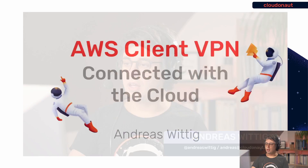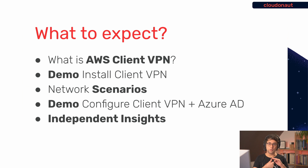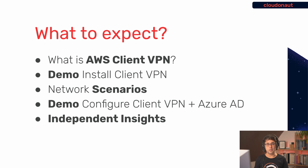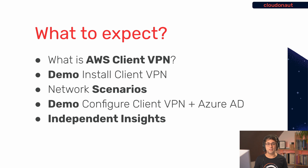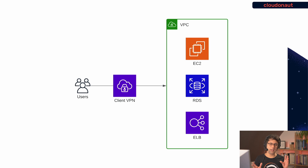Here's what this video covers: first, what is AWS Client VPN and how does it work; I'll show you how to install the VPN client and how everything works from an end-user perspective; we'll discuss network scenarios you can implement; and I'll show you how to configure Client VPN with Azure Active Directory for single sign-on. At the end I have some independent insights from using the service.